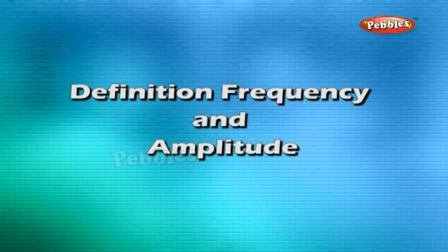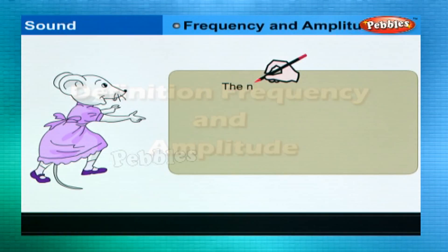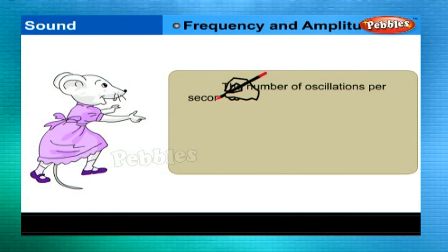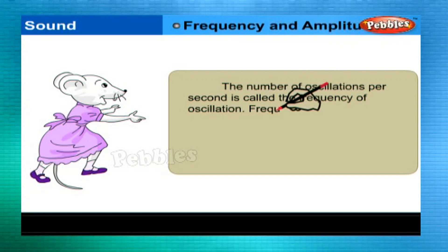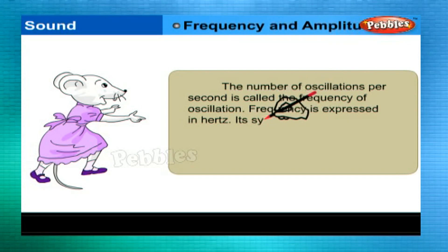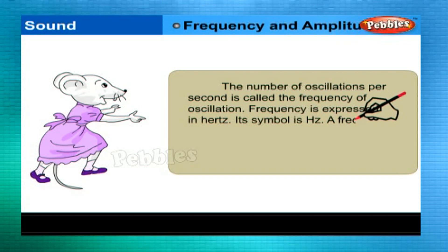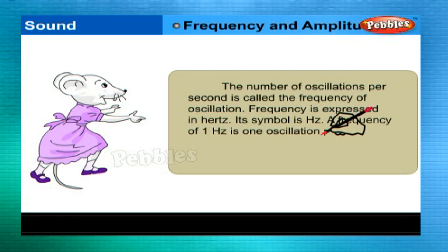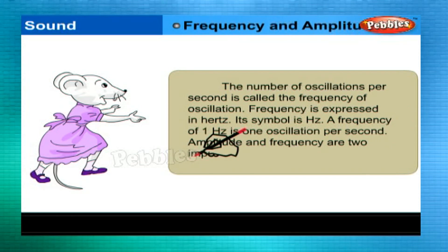Frequency and Amplitude: the number of oscillations per second is called the frequency of oscillation. Frequency is expressed in Hertz, symbol Hz. A frequency of one Hertz is one oscillation per second. Amplitude and frequency are two important properties of any sound.